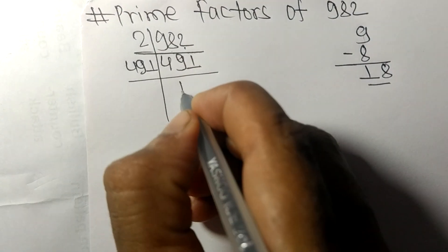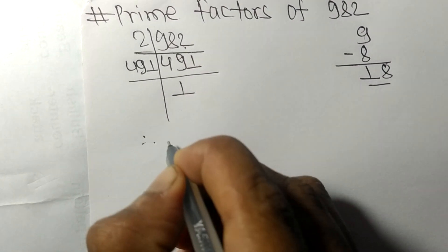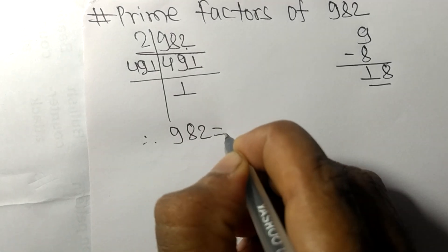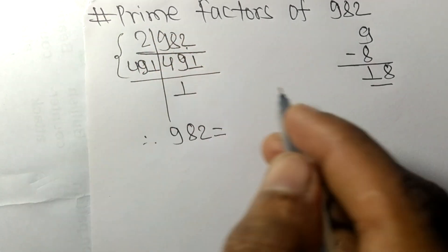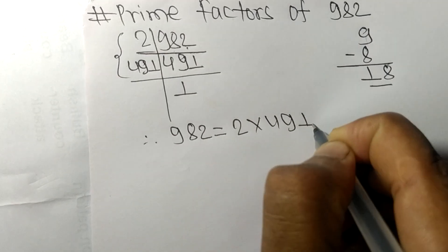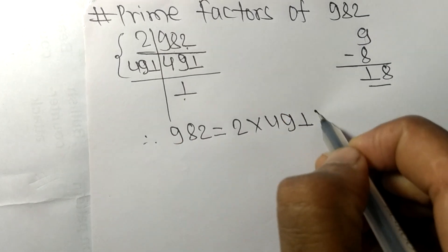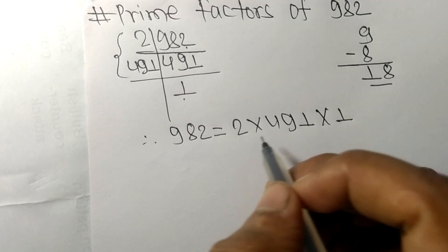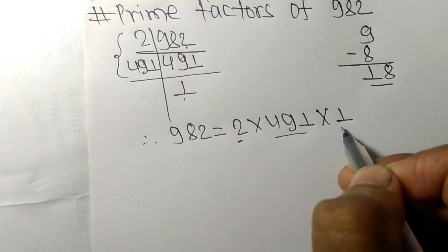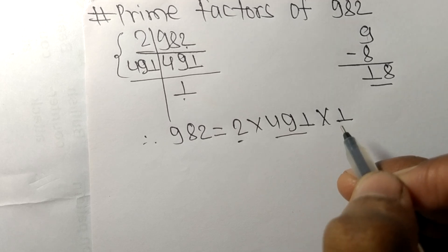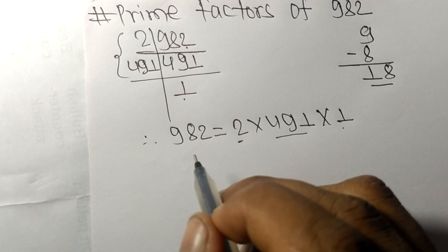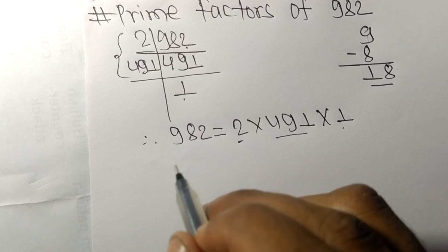On dividing we get 1. Therefore 982 is equal to 2 times 491 times 1. So 2, 491, and 1 are the prime factors of 982. That's it for today, thanks for watching.